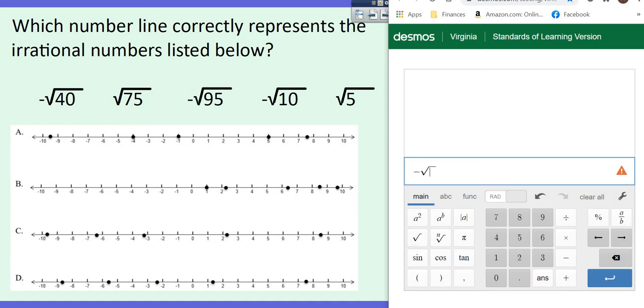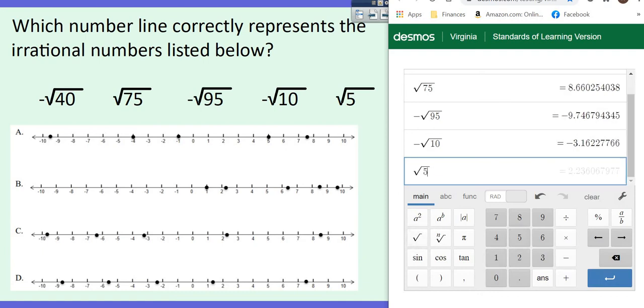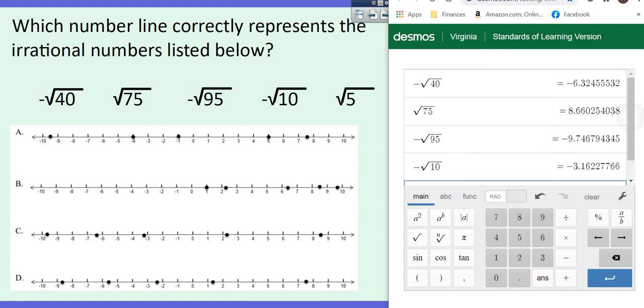Well, the first thing you've got to do is make sure you put these in your calculator correctly. So that's a negative square root of 40. Okay. So we don't have to change to a percent because they actually have these on a number line. So that is negative 6.3. So let's go ahead and put the rest of them in. We've got the square root of 75. We've got the negative square root of 95. We've got the negative square root of 10. And we've got the square root of 5.